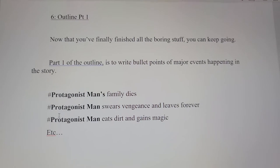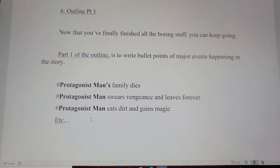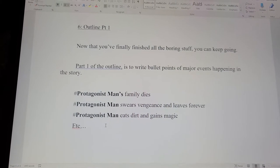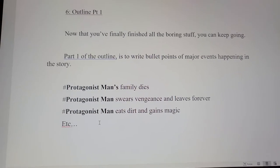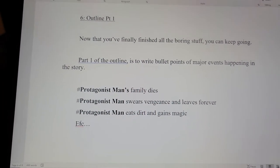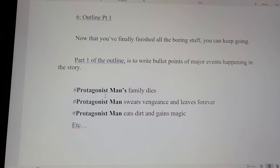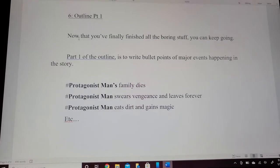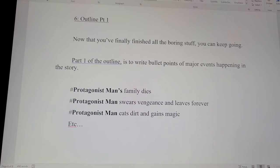Protagonist man's family dies. Protagonist man swears vengeance and leaves his home forever. Protagonist man eats dirt and gains magic, etc. This is just a bare-bones outline of the major plot points that are going to be happening in your story. From here you can keep going — protagonist man meets other protagonists, probably protagonist woman if I'm the one writing it. This bare-bones outline part one will make outline part two much easier. Remember, if you do everything in order, things are going to be much easier.